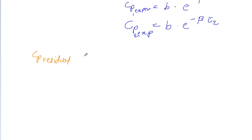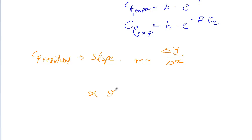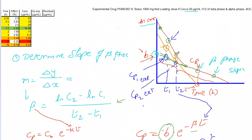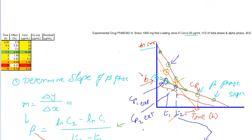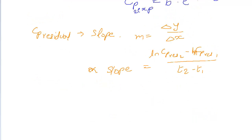Can we find the slope for the Cp residual line? Yes. It's the same slope formula, but here we call it the alpha slope. Alpha equals ln(Cp residual 2) minus ln(Cp residual 1) divided by t2 minus t1. So now we know the alpha slope value.